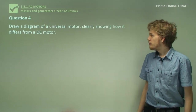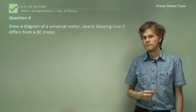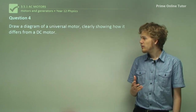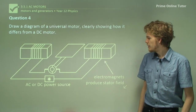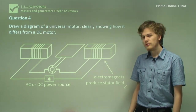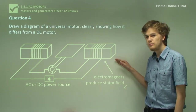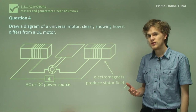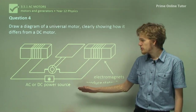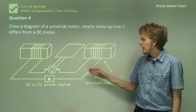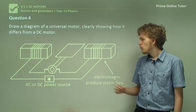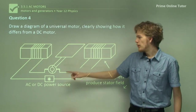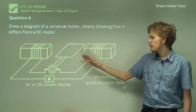Question 4: Draw a diagram of a universal motor, clearly showing how it differs from a DC motor. The picture of the universal motor will be quite similar to the DC motor, but with one main difference. In the diagram for the universal motor, we clearly label that we have electromagnets producing the stator field. This is the main difference between universal motors and DC motors. Whether an AC or DC power source is connected, it produces a magnetic field via the electromagnets and also runs through the rotor, so that when the direction of electric current changes, a constant torque is produced.